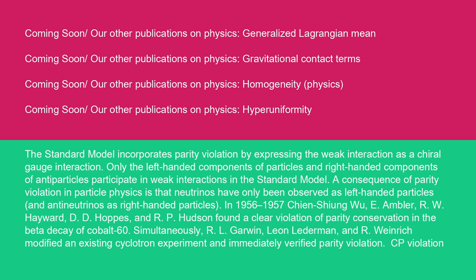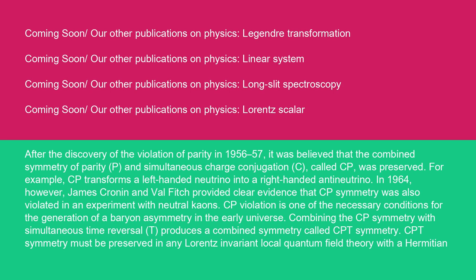CP violation. After the discovery of the violation of parity in 1956 to 57, it was believed that the combined symmetry of parity P and simultaneous charge conjugation C, called CP, was preserved. For example, CP transforms a left-handed neutrino into a right-handed antineutrino. In 1964, however, James Cronin and Val Fitch provided clear evidence that CP symmetry was also violated in an experiment with neutral kaons.